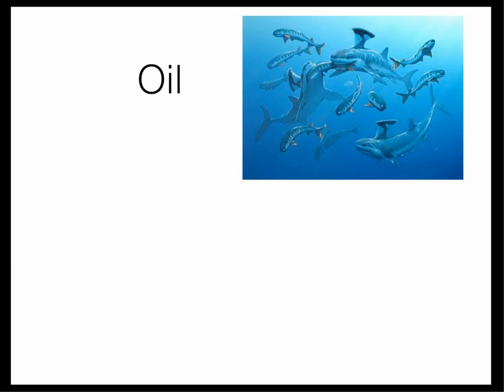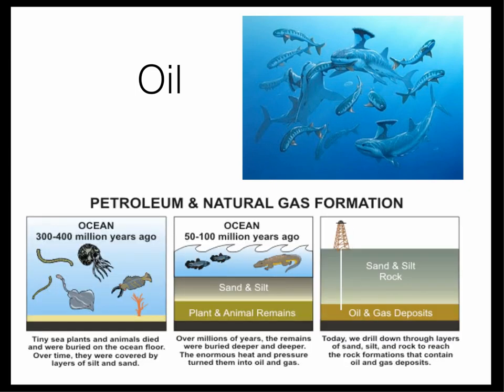Oil is also very important to modern humans — we use it in our cars and make plastics out of it. Oil is the remains of ancient plants and animals in the sea. Tiny sea plants and animals died and were buried on the ocean floor, covered by layers of silt and sand. Over millions of years, the remains were buried deeper and deeper, and the enormous heat and pressure turned them into oil and gas. Today, we drill down through layers of sand, silt and rock to reach the rock formations that contain oil and gas deposits.